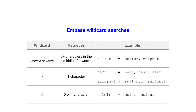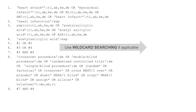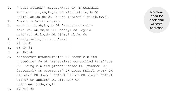Embase has wildcard searches that are not available in PubMed. First is the middle-of-word truncation: the asterisk can represent zero or more characters in the middle of a term. Next is the single character wildcard, which represents a single letter or number in a word. Lastly, there is a wildcard that represents zero or one character; as shown in the example, it can help find UK and US spellings. Review the text words in your strategy and use Embase wildcard searching if applicable. In our strategy, there is no clear need for additional wildcard searches.